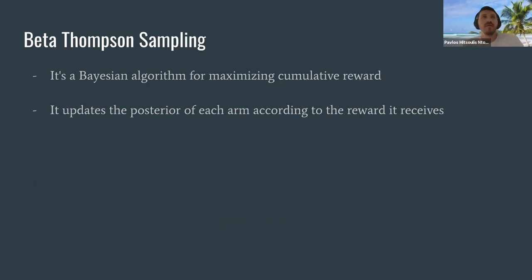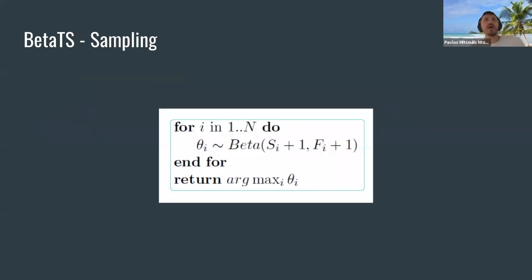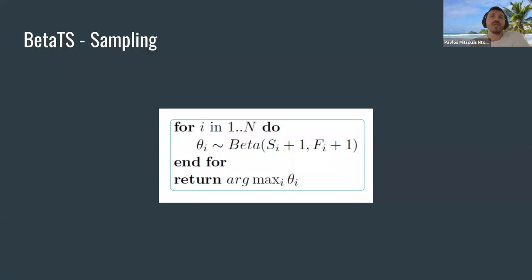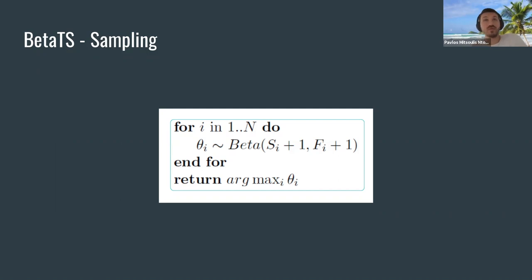A classic algorithm is Beta Thompson Sampling — essentially a Bayesian algorithm where you maximize cumulative reward by updating the posterior of each arm from the rewards received from the environment. Every arm is assigned a beta distribution. The algorithm draws a value (theta) from this beta distribution and selects the arm with the highest theta. At the beginning all beta distributions can look similar, with parameters alpha and beta equal to one — though this is debatable.